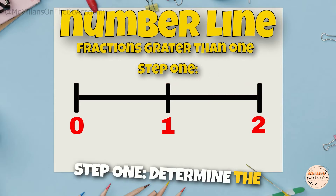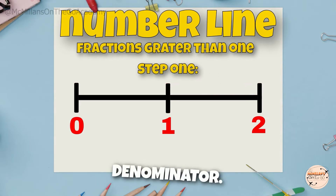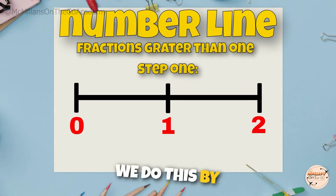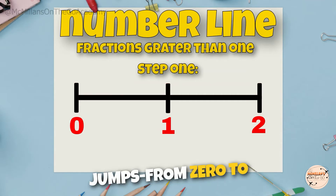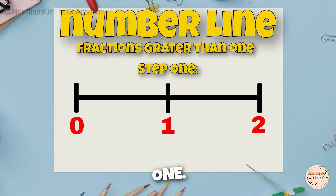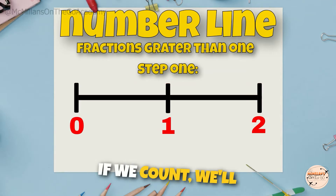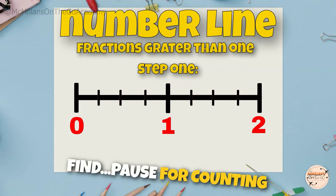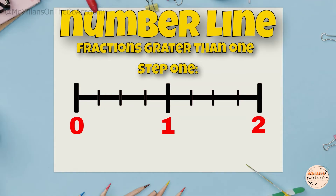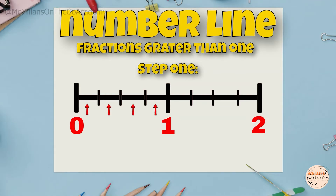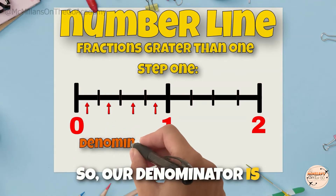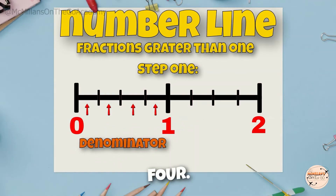Step one: determine the denominator. We do this by counting the spaces, or jumps, from zero to one. In our first example, if we count, we'll find four spaces. So our denominator is four.